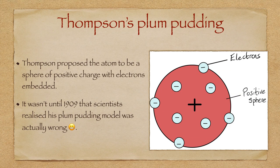Thomson proposed the structure of an atom in 1898, which is known as Thomson's plum pudding model. You are expected to be able to draw and label this diagram. Although protons had not yet been discovered, Thomson knew that there must be some attractive force to prevent electrons being lost all the time. His model was widely accepted until 1909.